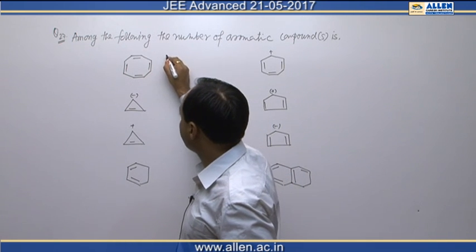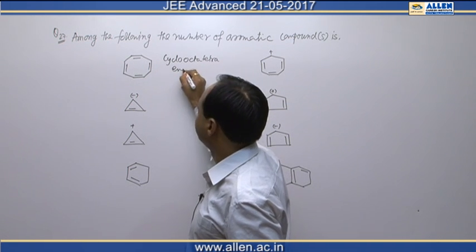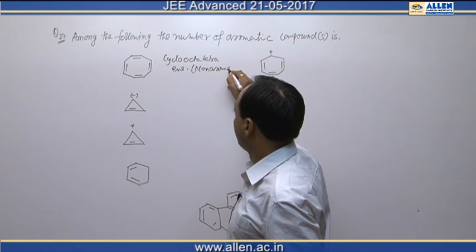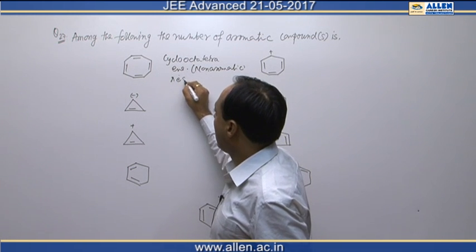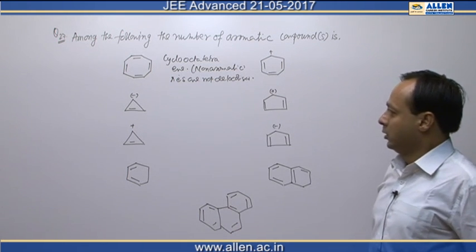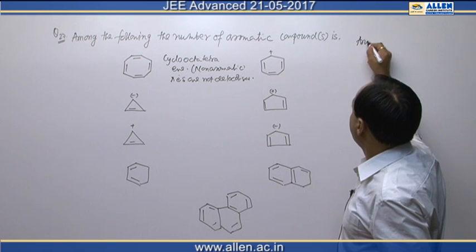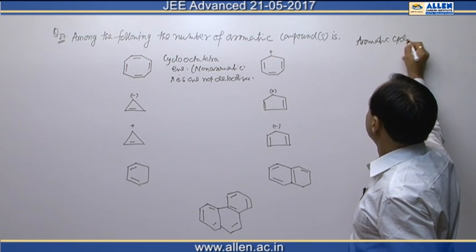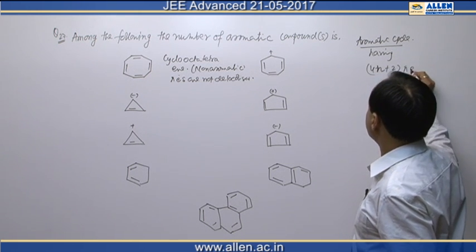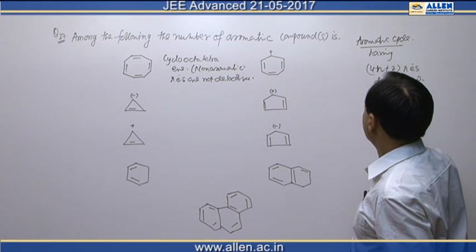The first compound is cyclooctatetraene. This compound is non-aromatic because its pi electrons are not delocalized. Aromatic compounds are those which have delocalized pi electrons, specifically 4n+2 pi electrons delocalized — that is according to Hückel's rule.